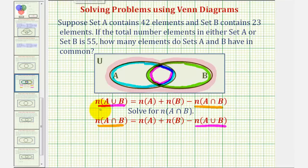And therefore the number of elements in A intersect B, the number of elements that these two sets have in common, which is what we're trying to find, is equal to the number of elements in A, which we know is 42, plus the number of elements in B, which we know is 23, minus the number of elements in A union B, which is 55.